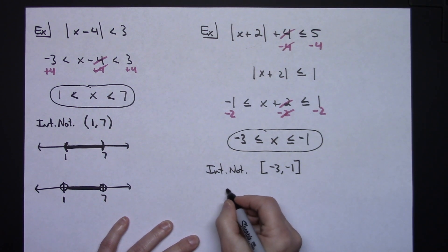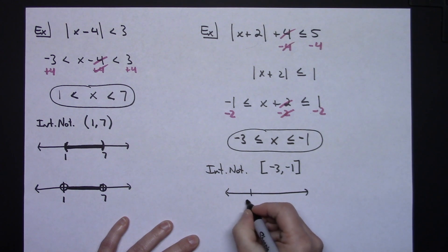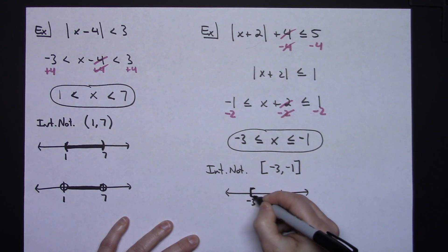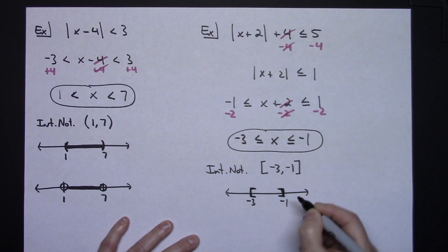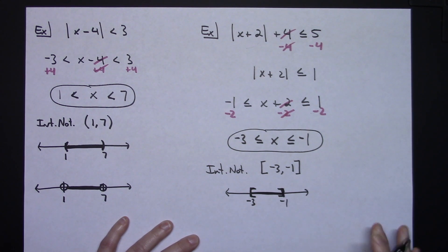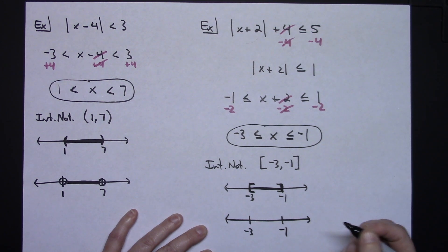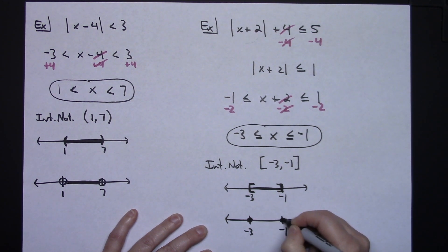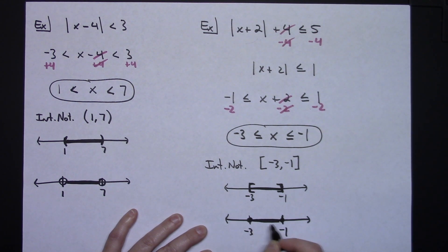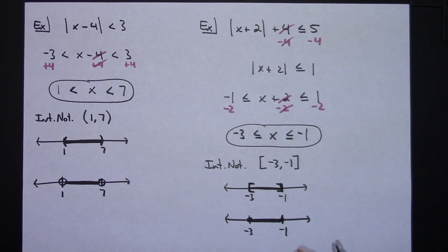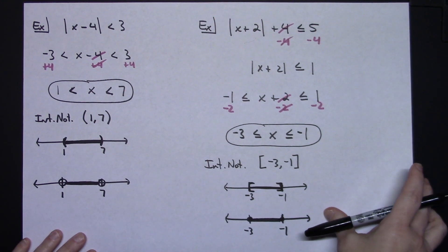In interval notation, since it's less than or equal to, I use square brackets: [−3, −1]. On a number line, negative 3 is on the left and negative 1 on the right, with square brackets for interval notation. For open/closed dot notation, I would use closed dots at both negative 3 and negative 1, shading in the middle, since those points are included.